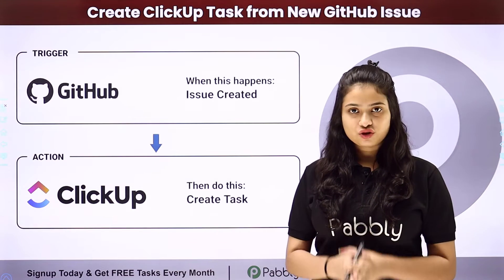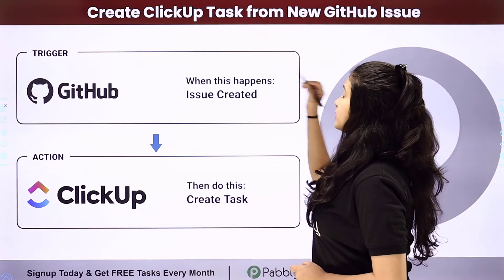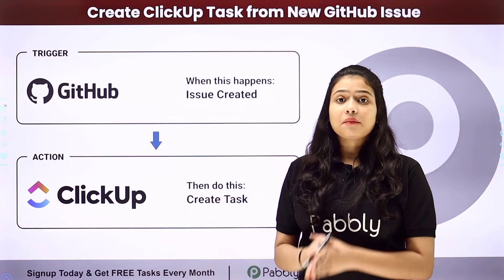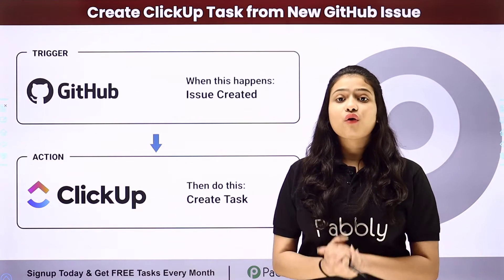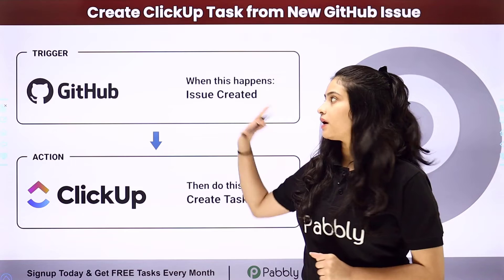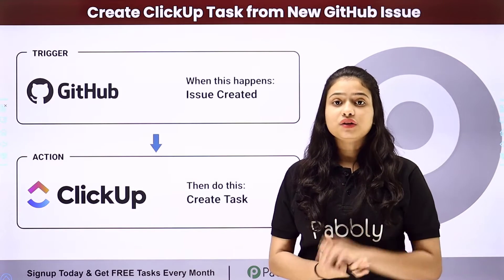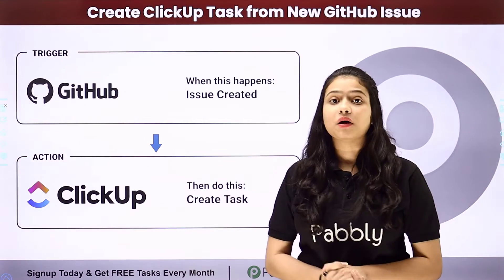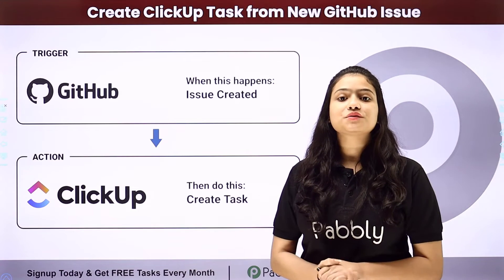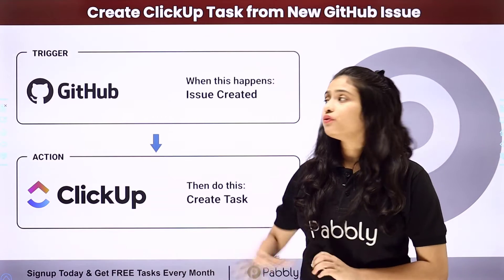Hello everyone. In this video we are going to learn how to create ClickUp tasks from new GitHub issues. Suppose I am having a software company and I want that whenever a new issue will be raised in my GitHub account related to the software, a new task should be created in ClickUp for my backend team.